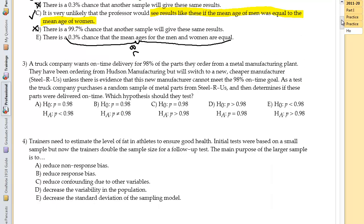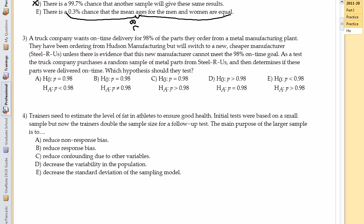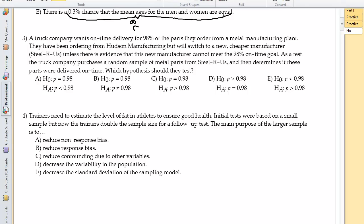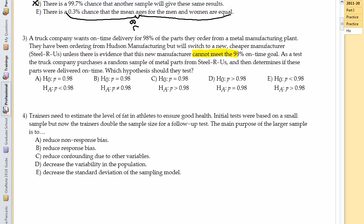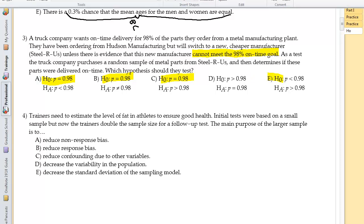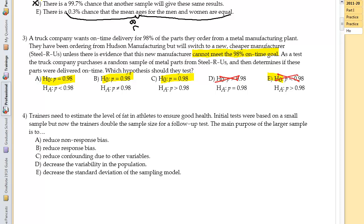So let's go on to three. A truck company wants on-time delivery for 98% of its parts that they order. They have been ordering but will switch to a new cheaper manufacturer unless there is evidence that the new manufacturer cannot meet. I think this is really important, cannot meet the 98% on-time goal. The cannot meet is going to be a less than. So if we're going to test the truck company purchases a random sample and then determines which hypothesis should they use. Well, obviously they want the null hypothesis to be the 0.98, right? They want that. These are all good right here. These guys where you have the greater than, less than, these are going to be no bueno null hypothesis. Because we're going to assume that they can meet the 98% goal.